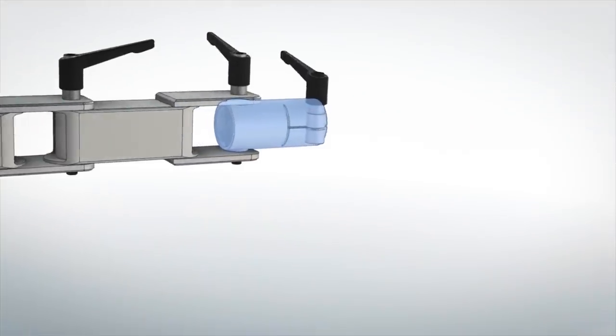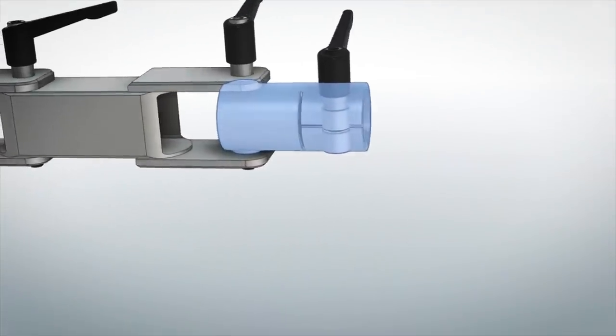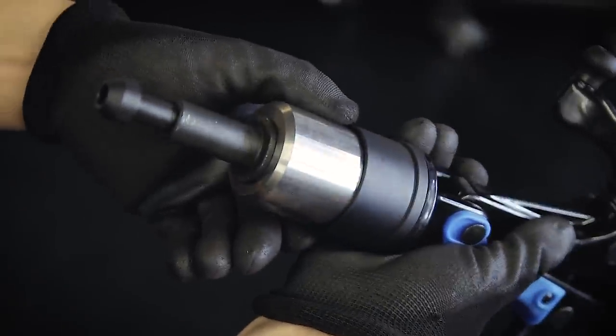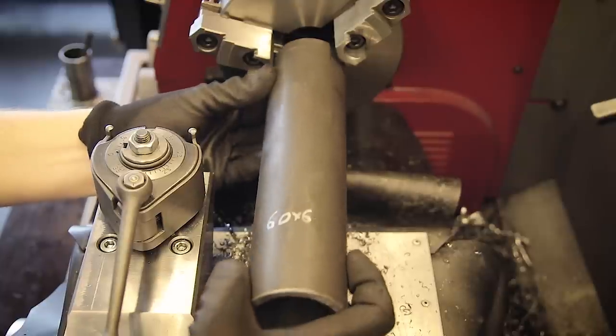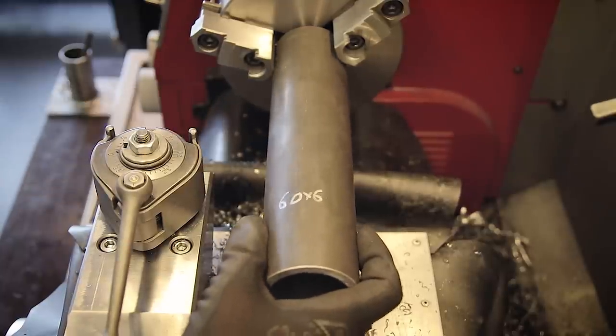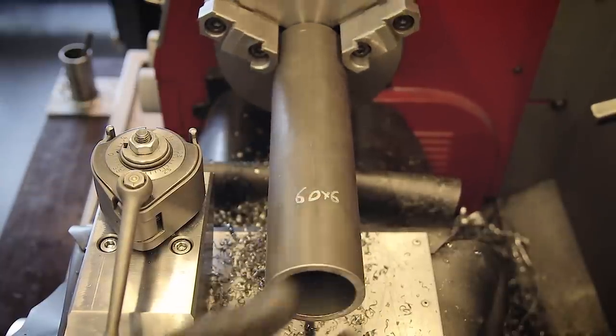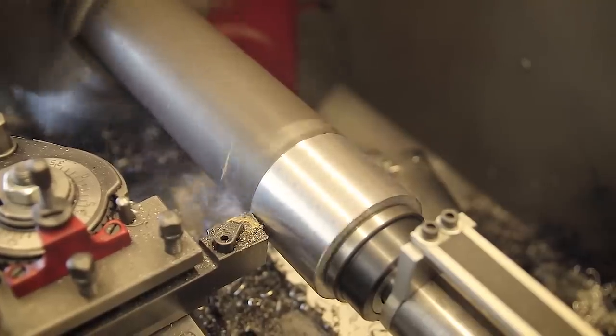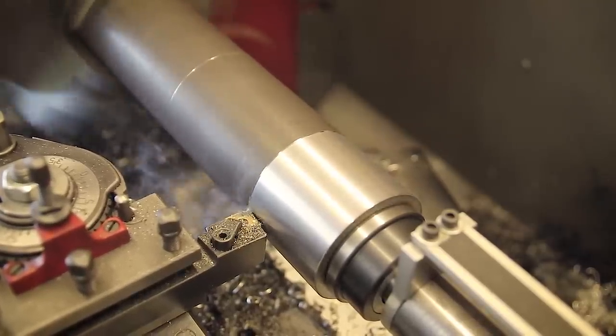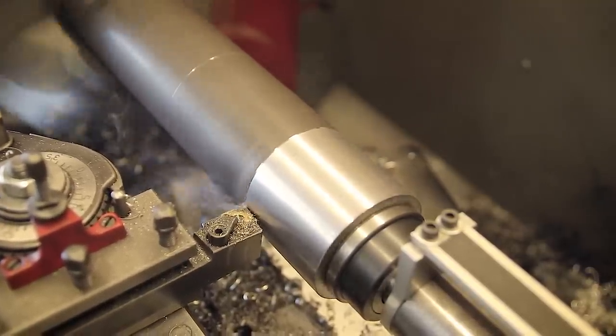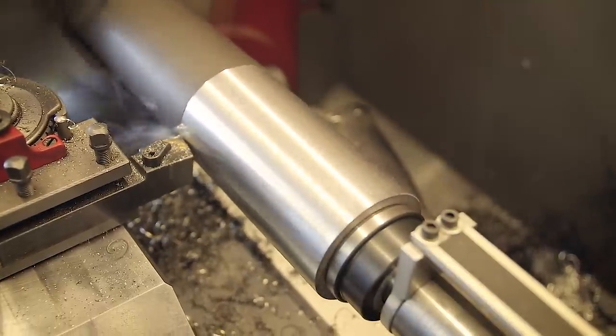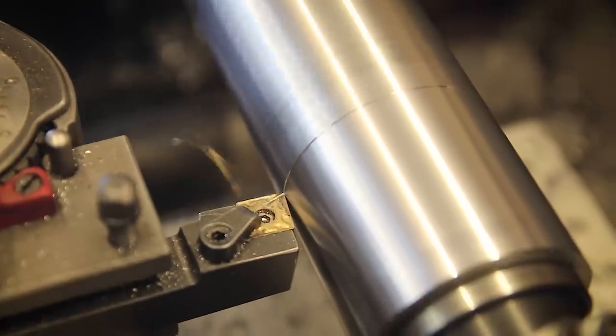The last part we have to make is this clamp that holds the claw that holds the bike. This claw is designed to interface with a 50mm tube. This is a piece of 60x6mm steel tubing which has an ID of 48mm, so that I can bore it out on the lathe to 50mm for a nice fit. But in retrospect, just buying a seamless 60x5 steel tube that already has a 50mm ID would probably have been easier, and this way you wouldn't need a lathe.